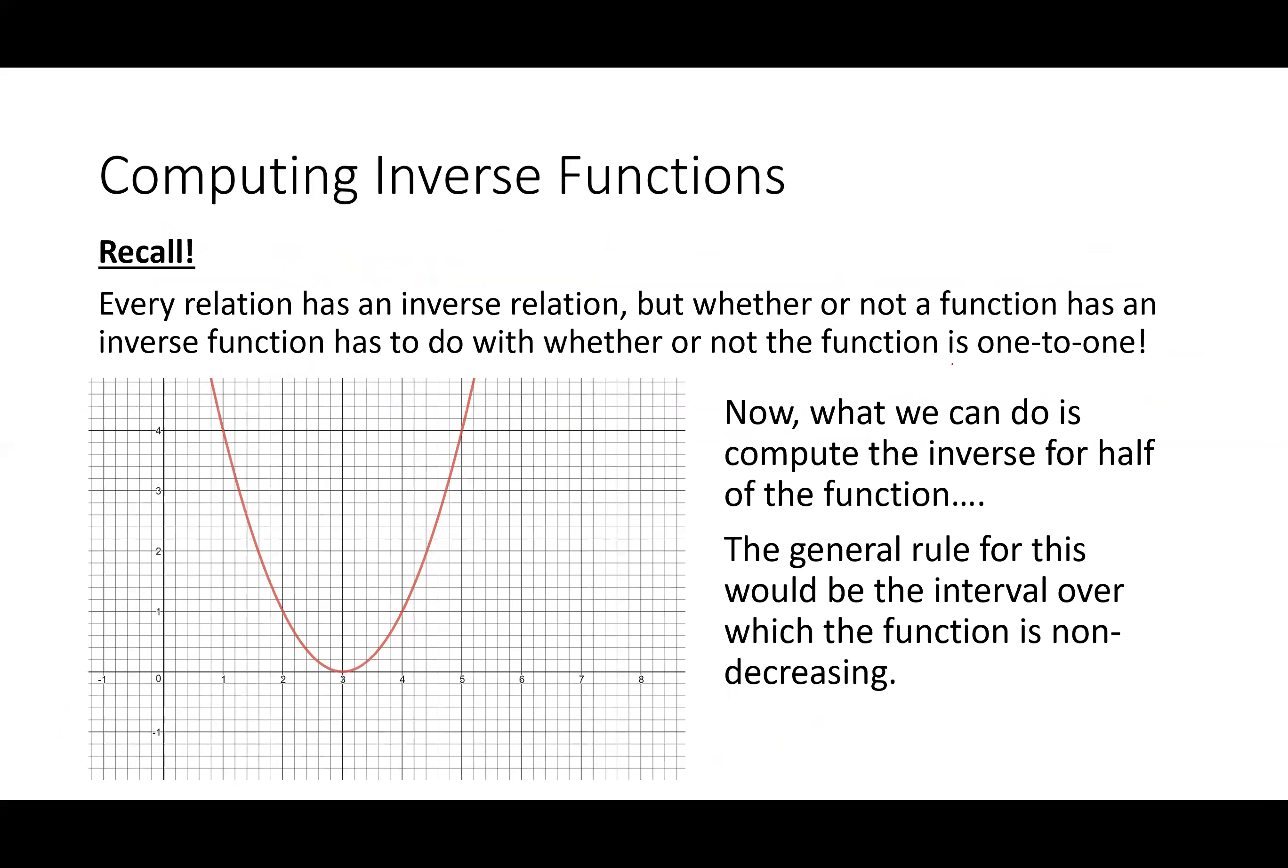Now, for inverse functions, let's consider this quadratic function. So every relation is going to have an inverse relation, but whether or not that function has an inverse function has to do with whether or not the function is one to one. So what we're going to do here is we're going to restrict this particular function. And the rule is that we're only going to keep the function, the parts of the function, which are non-decreasing. So when I think about whether or not this is actually even going to have an inverse function, we know it's not because it's definitely not one to one. See, if I draw this horizontal line, I'm hitting the function twice. So we have a problem here.